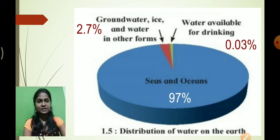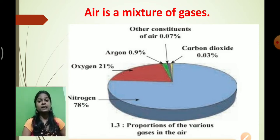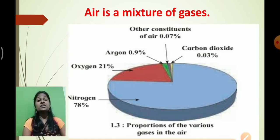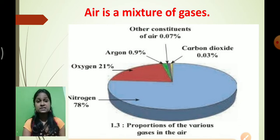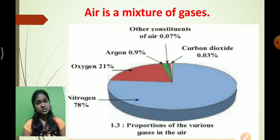Air is a mixture of gases. There are many types of gases present in the air like nitrogen, oxygen, carbon dioxide, hydrogen, and others. Out of these, 78% of the air is occupied by nitrogen. Oxygen in the air is 21%, and carbon dioxide present in the air is 0.03%.